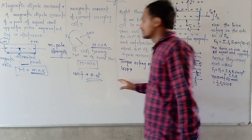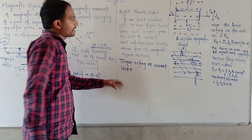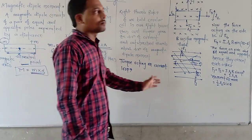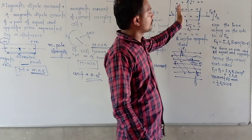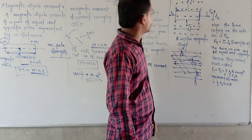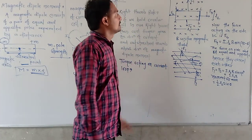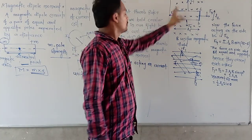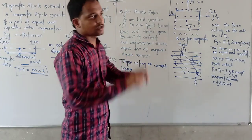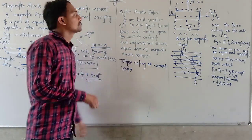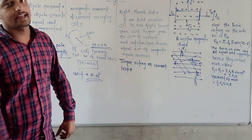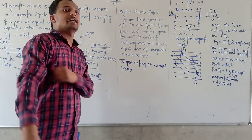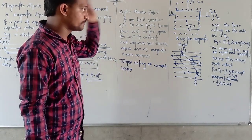After that, we find the torque acting on a current-carrying loop. Suppose we consider a uniform magnetic field in which we have placed a current-carrying rectangular loop.